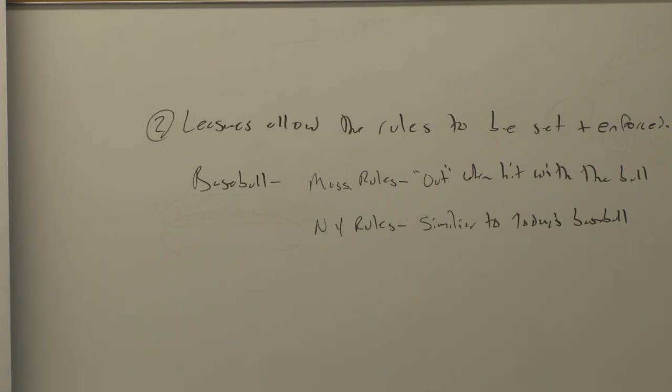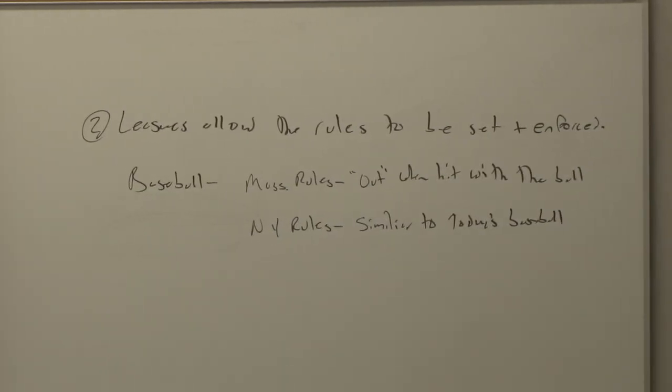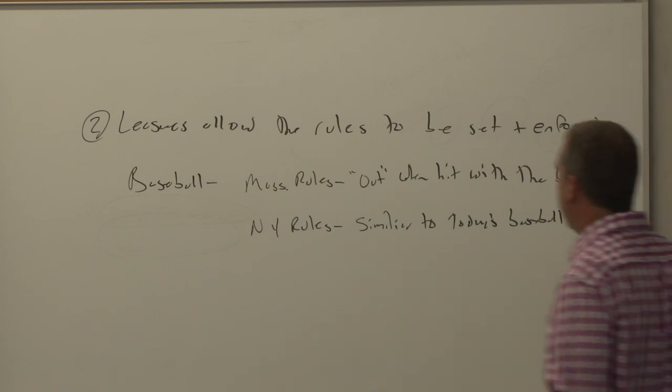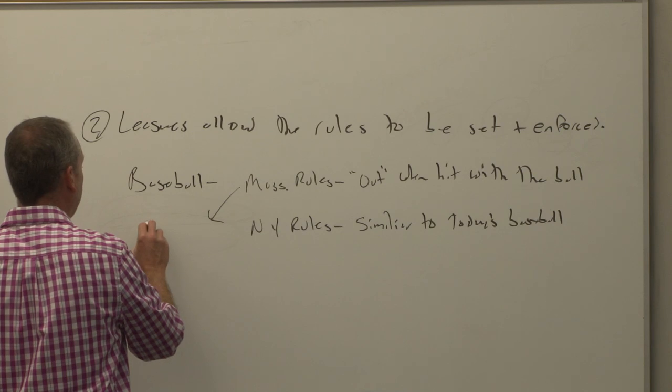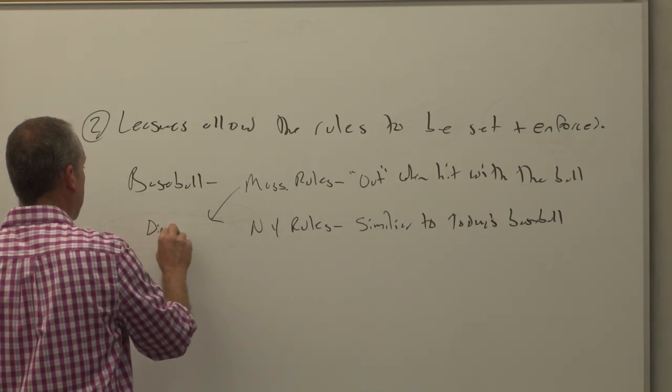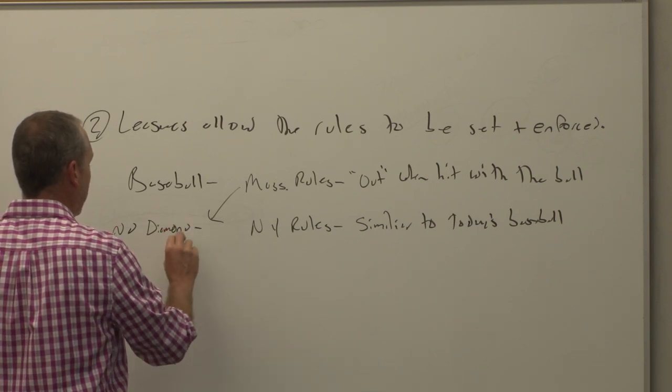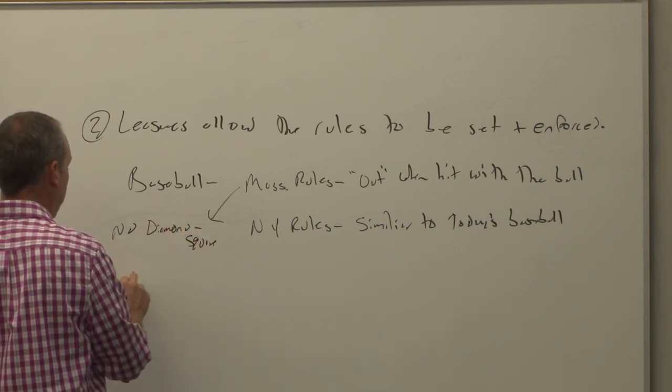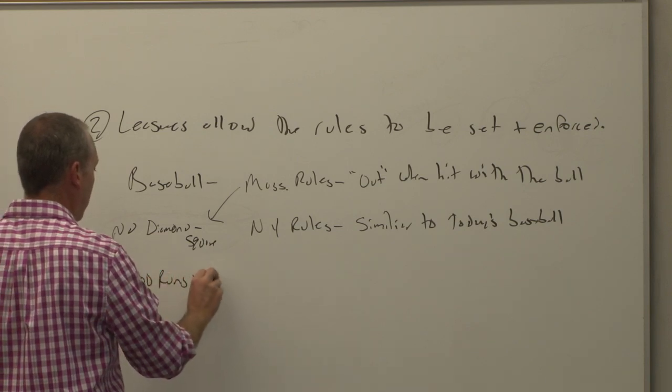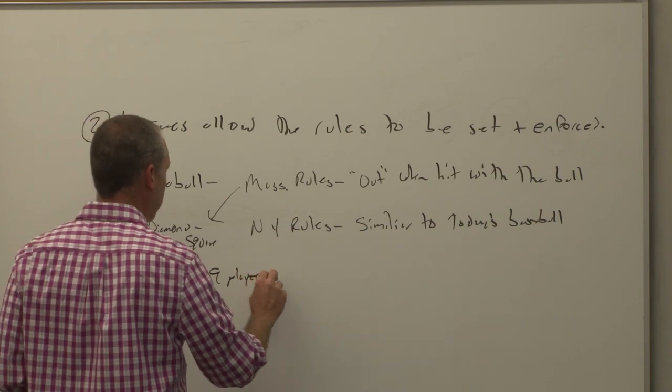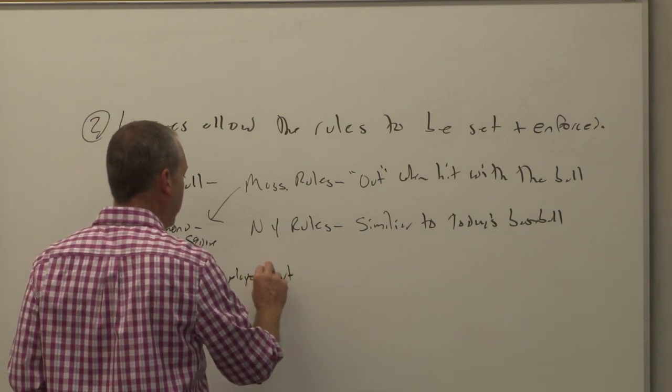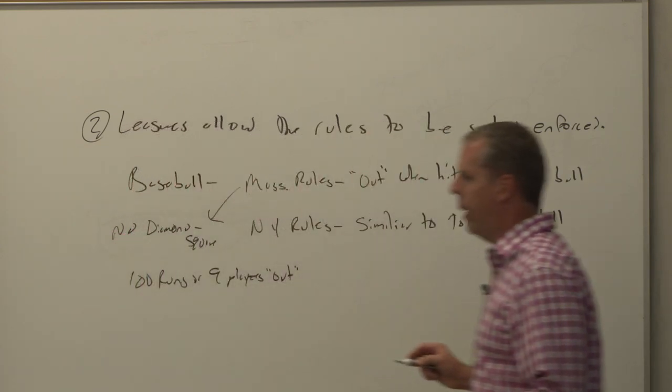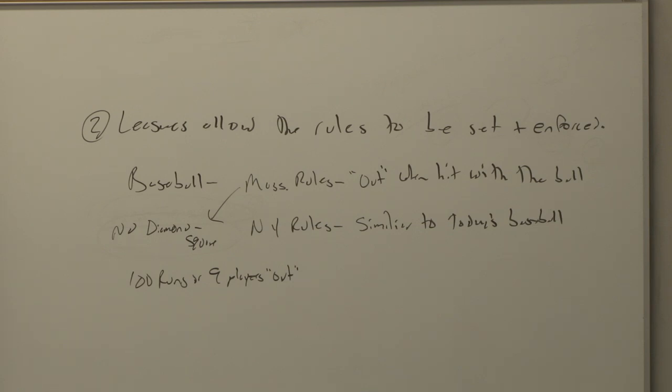Bases in Massachusetts rule were in a square, not a diamond. To win, you had to basically get 100 runs or to get every person out. So you've got a square, no diamond, but square bases. 100 runs or your nine players getting out, whichever comes first. Well, you can imagine how long it's going to take to get 100 runs. So if one set of teams is playing by one set of rules and another set of teams is playing by a different set of rules, you're going to have problems.